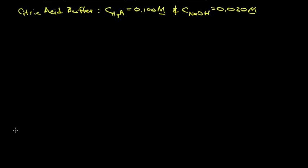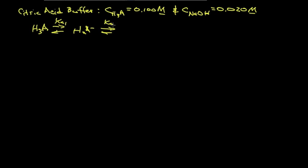Up till now, everything we've done could have been handled with the general weak acid equation. Let's take a look at a citric acid buffer. Imagine we have, after mixing, a net concentration of 0.1 M citric acid and 0.02 M sodium acetate. Citric acid is a particularly difficult situation — it's a tri-protic acid with three Ka values. The Ka values are very close together, so you can't ignore equilibrium between the other species and must consider all of them simultaneously.